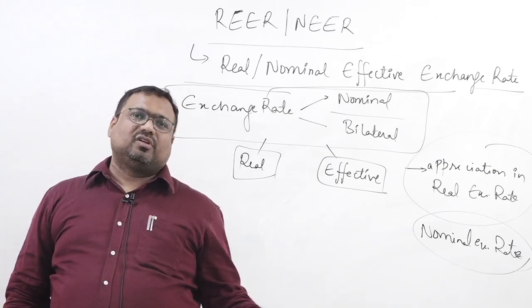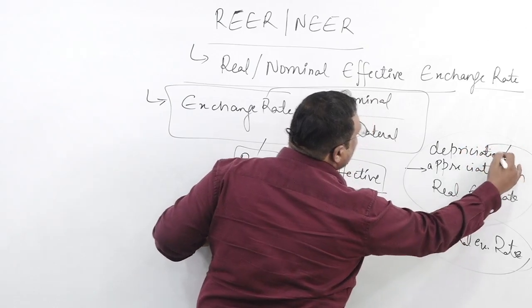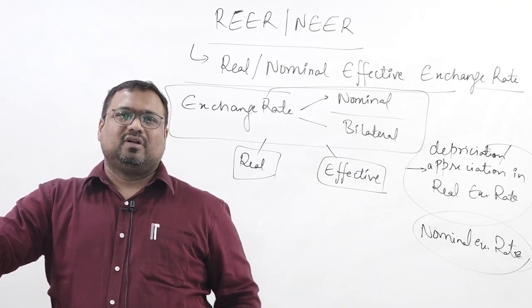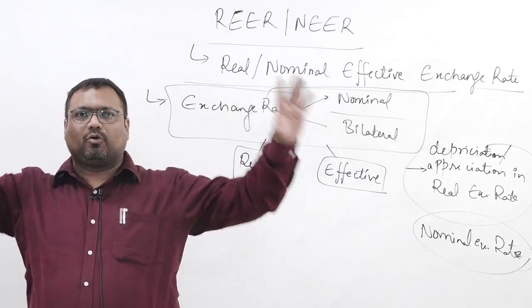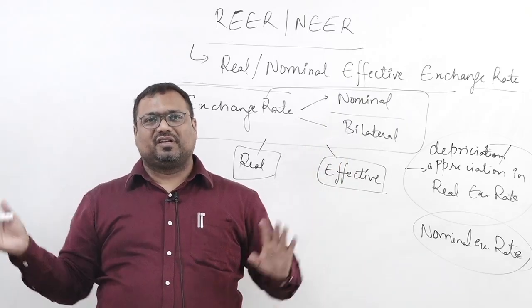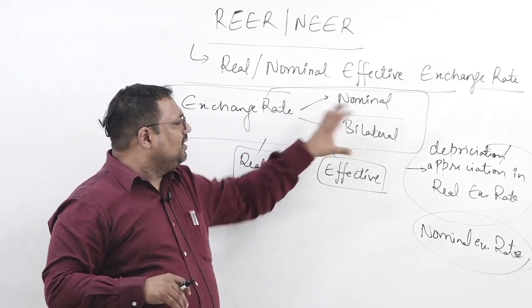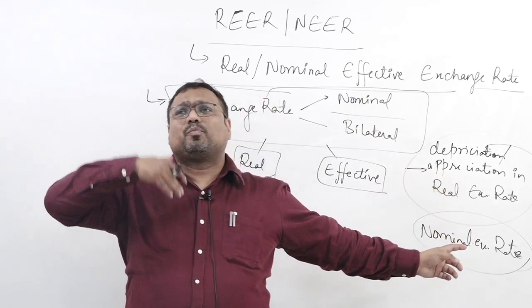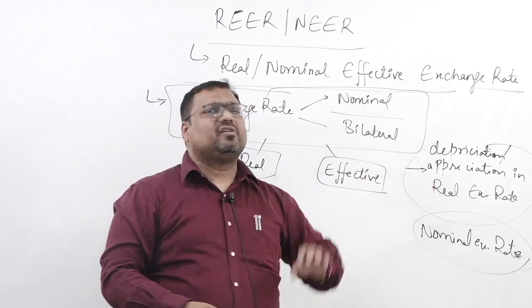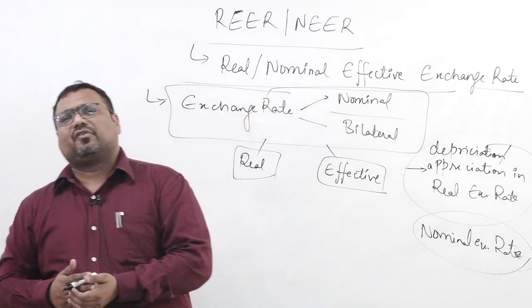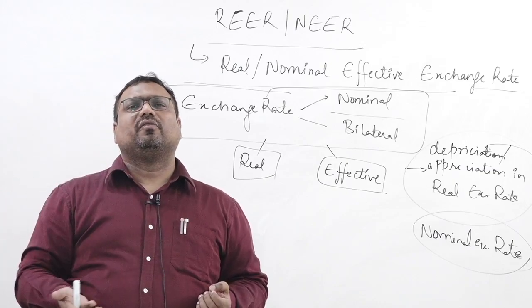Depreciation is the opposite. If there is depreciation in real exchange rate, it means we will get fewer products from abroad against each of our products. In nominal exchange rate, depreciation simply means we will get fewer dollars. So the key difference between nominal and real exchange rate is important to understand NEER and REER. Real exchange rate is used when we want to analyze what products or services we can get in exchange. Currency to currency is simply bilateral, and in practical day-to-day life we always use nominal exchange rate.